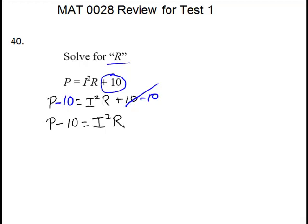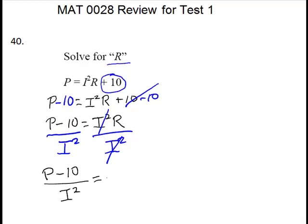So that's p minus 10 equals i squared r. Go back on the side of the variable that you want. So you want the r. r is multiplied by the i squared. So to get the i squared off, you're going to divide it out. So we're going to divide on both sides by the i squared. We'll cancel. On the left-hand side, you're just going to leave it. It's okay that it's a fraction and it looks a little weird. r is isolated. That was our goal.